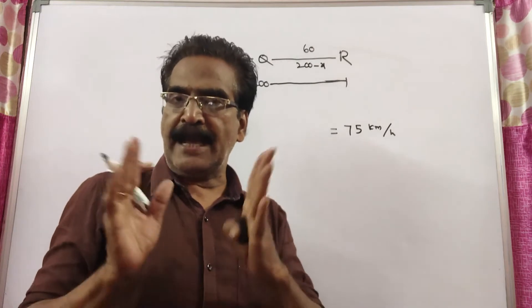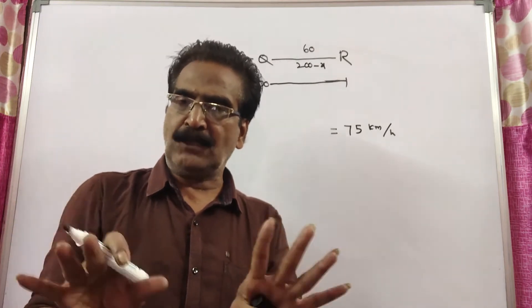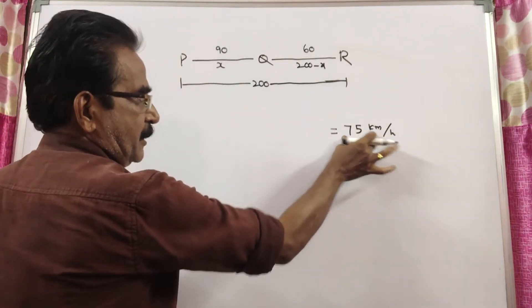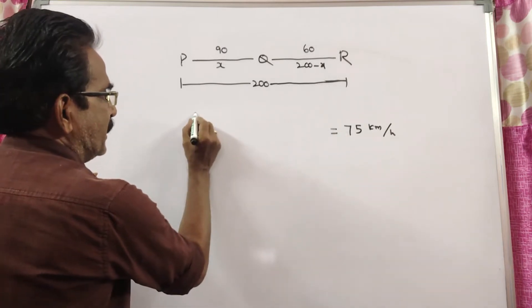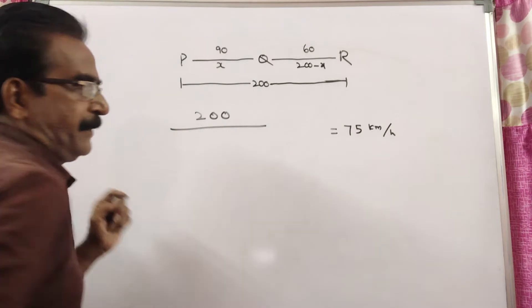We know one more thing: average speed. Average speed is equal to total distance divided by total time taken.